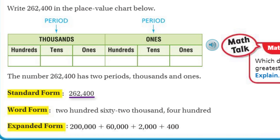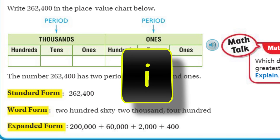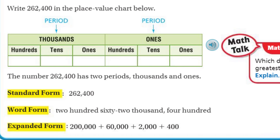In word form we write 262,400 — and notice there's no 'and' in any of these word forms. In math, we use the word 'and' only when talking about decimals, which we haven't covered yet. Expanded form means making the number longer. Think of expanding — like water heating up and expanding. The expanded form is 200,000 + 60,000 + 2,000 + 400. There are no tens or ones, so we don't write anything there.